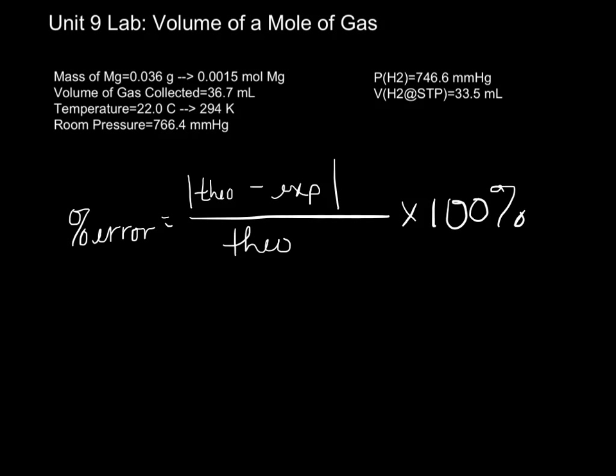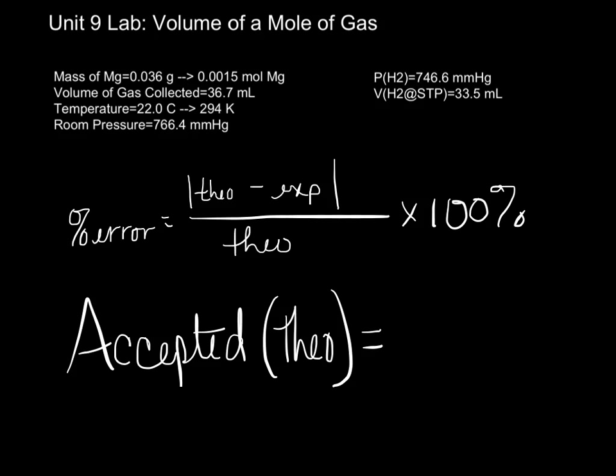For this one, the accepted value, or theoretical value, is 22.4 liters of gas at STP. Which, on quick glance, we didn't do too bad. Final thing, make sure you calculate your percent error. We will be collecting class data as well. So, be prepared to present your data, so that we can get a class average.